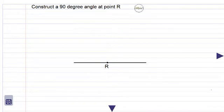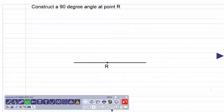Let us construct a 90 degree angle at point R. We already have the line and we have point R indicated on it. So let us get our compass.